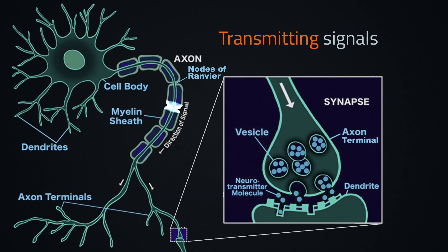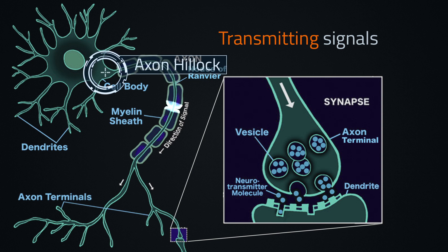A neuron receives electrical signals from its dendrites, and if at the beginning of the axon — at the place called the axon hillock — the combined signal exceeds a certain threshold, the neuron fires and the signal is propagated along the axon. This signal is called an action potential.